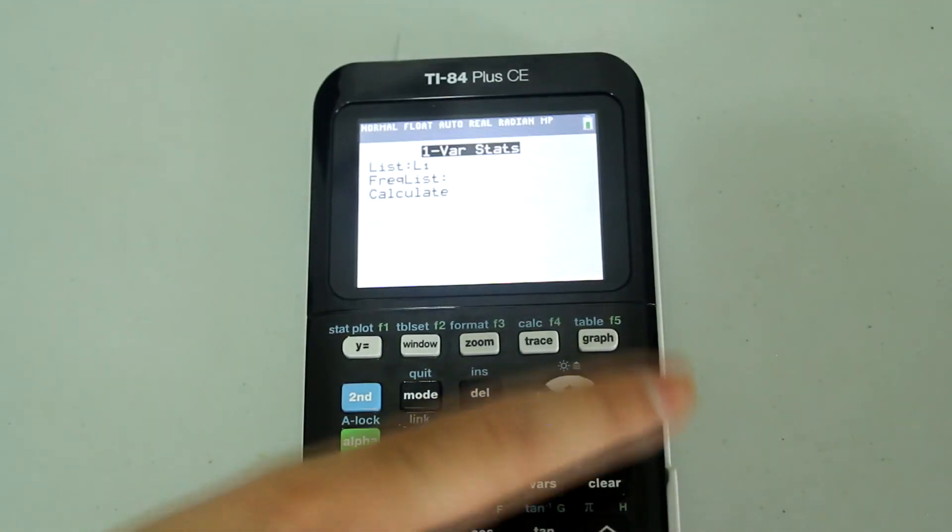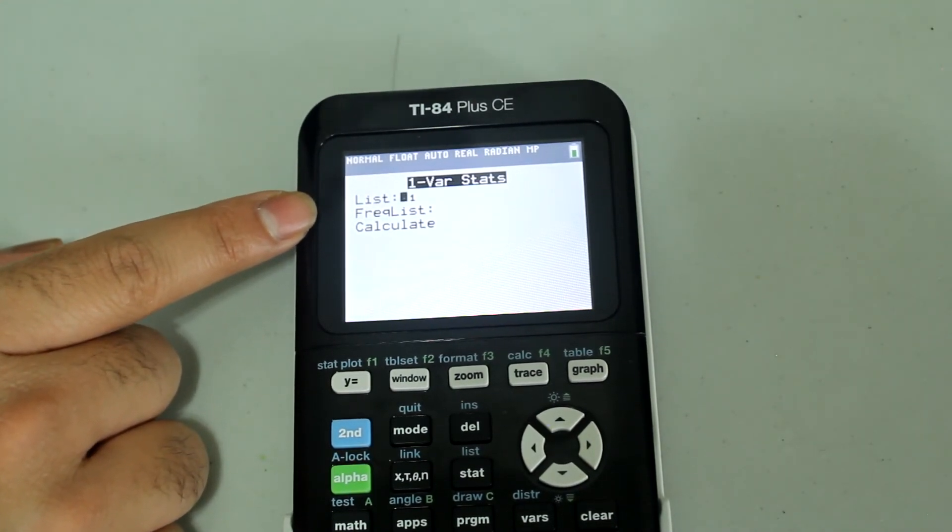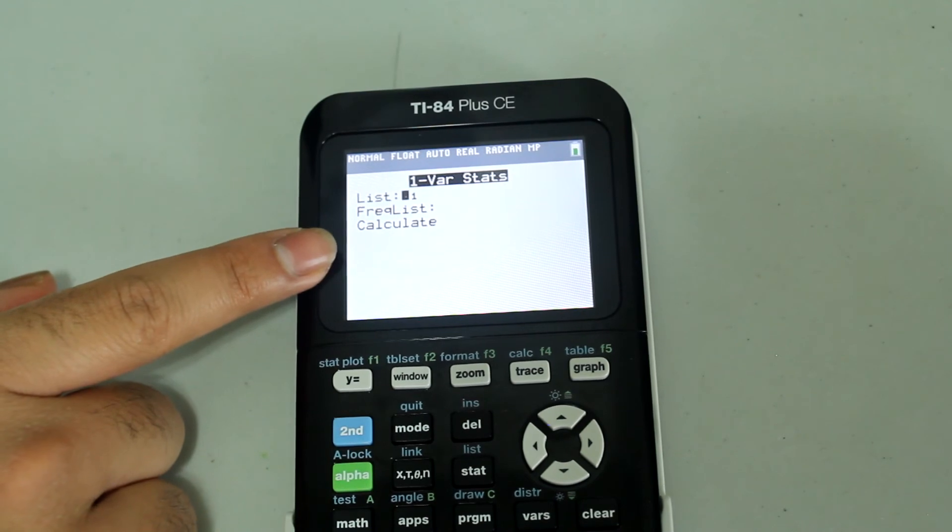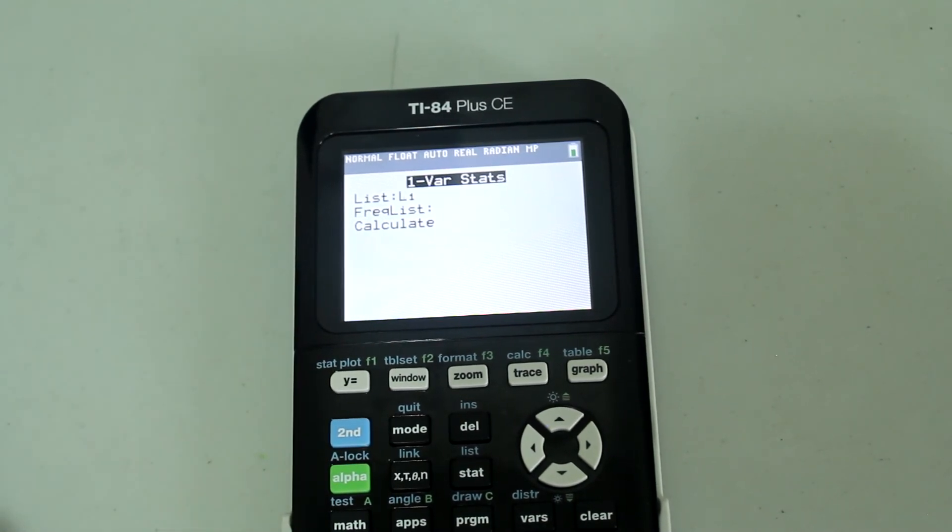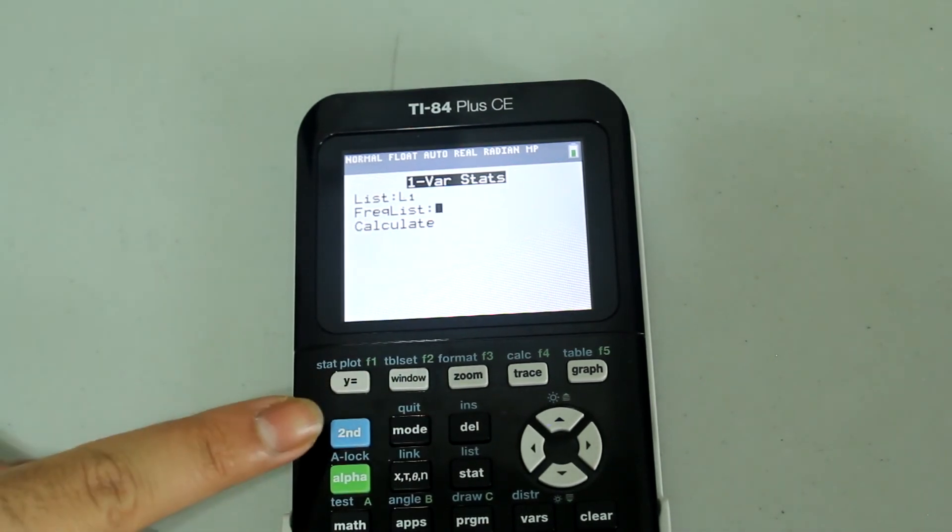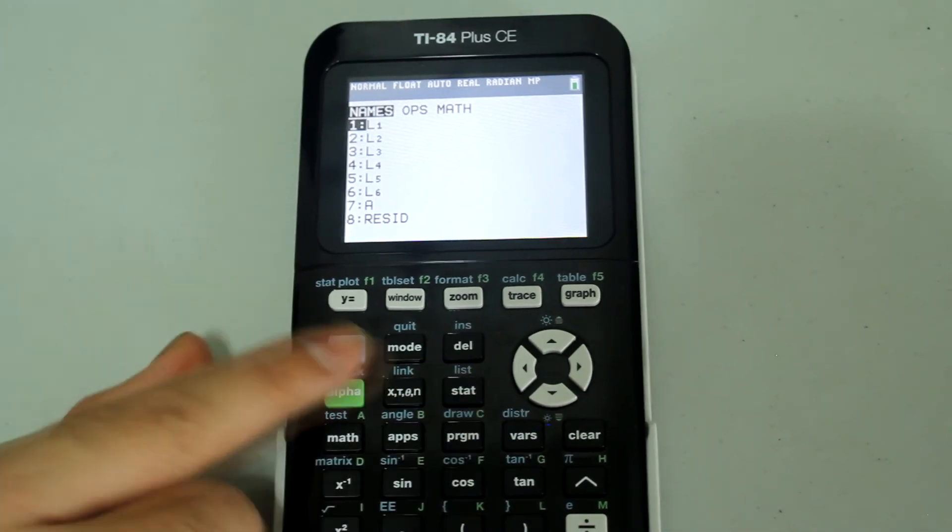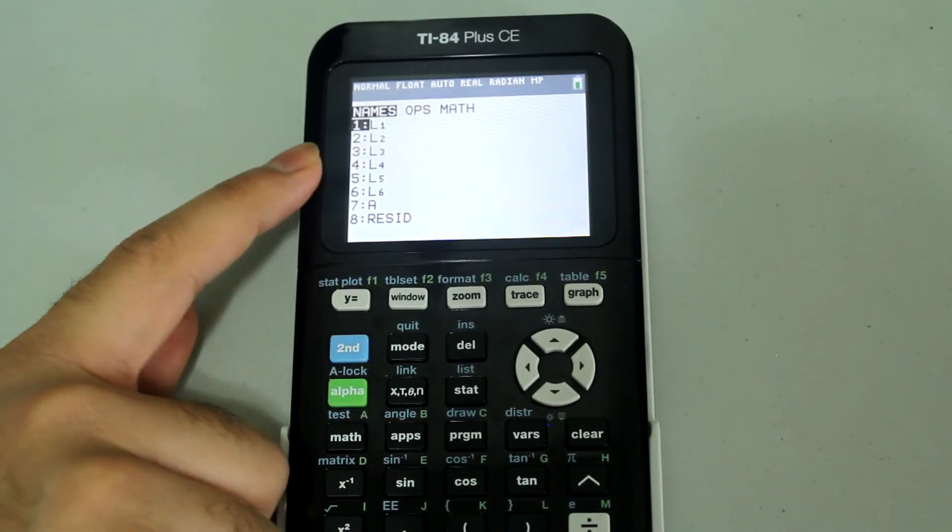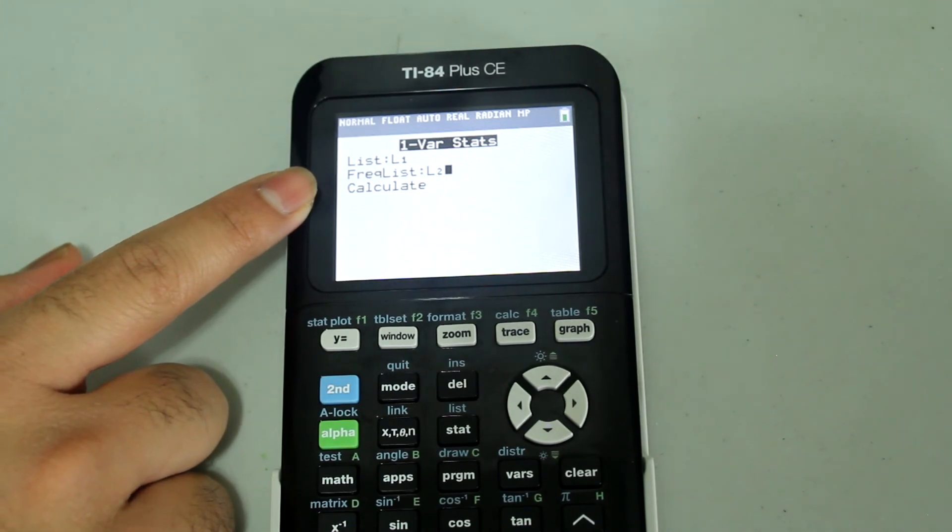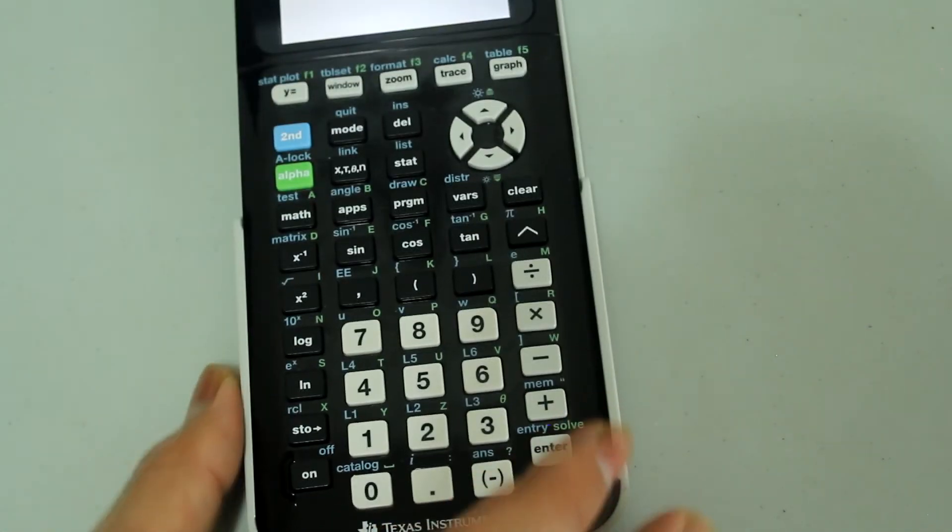My list is still L1 because that's where my data points appear, and this time I do have a frequency list. So I'm going to arrow down to frequency, and then press 2nd and the stat button to select list. This time I'm going to arrow over to L2 and select that, so press enter. Now I have my frequency list set as L2, so just arrow down to calculate and press enter.